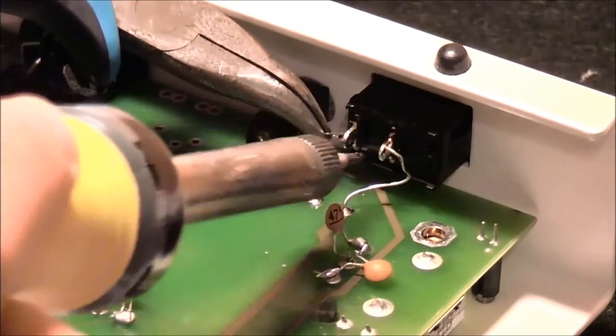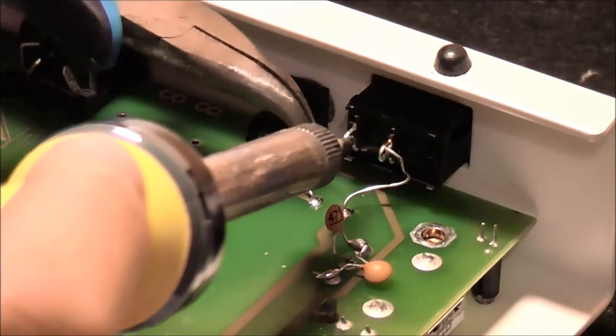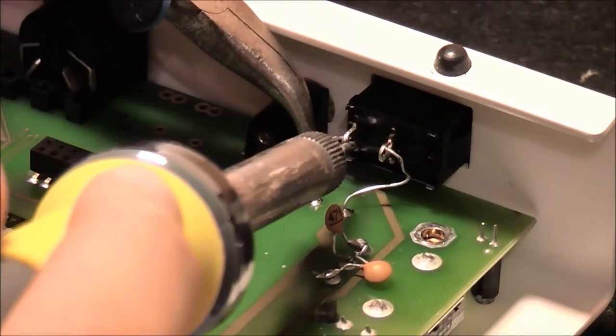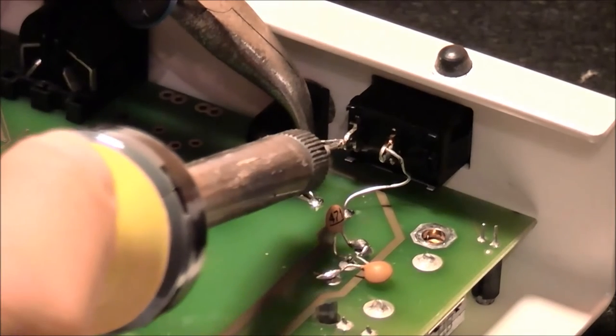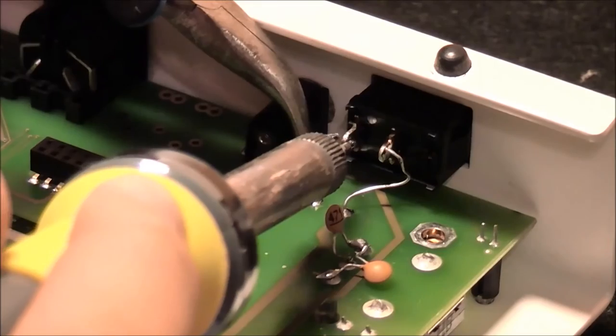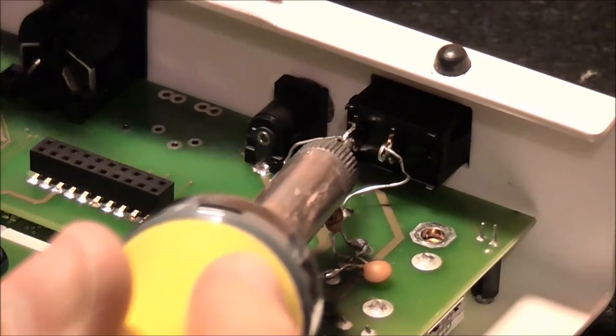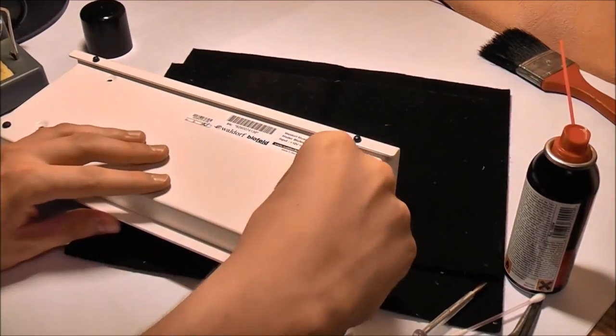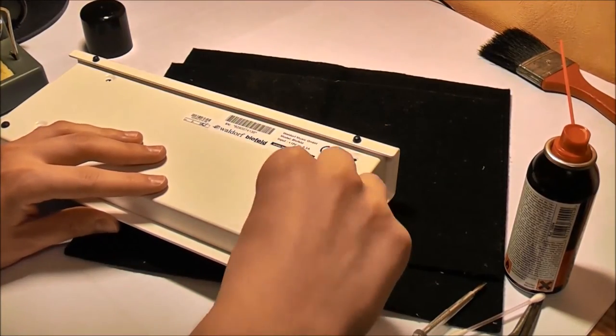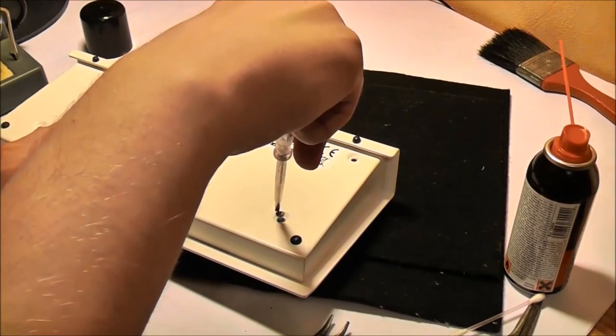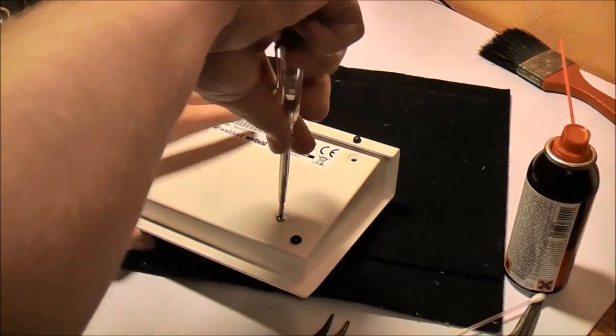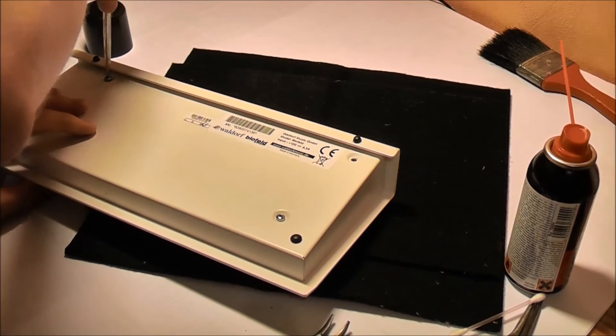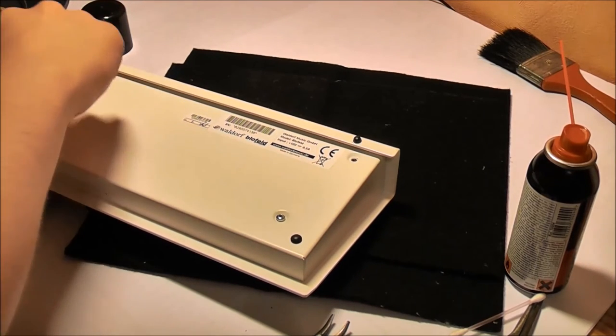So, connect again the power switch to the PCB by soldering. Well, it takes a bit of time because I tried to use a lower heat to be sure not to destroy the PCB or other parts. And last four screws. After that, you can put on the encoder knobs again. And this is all.